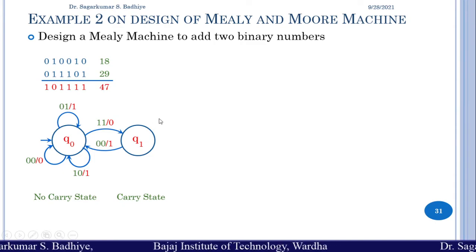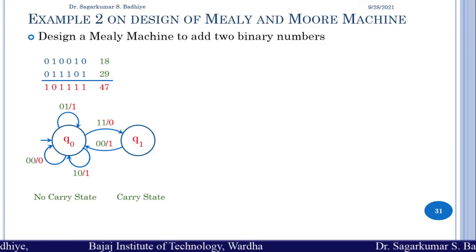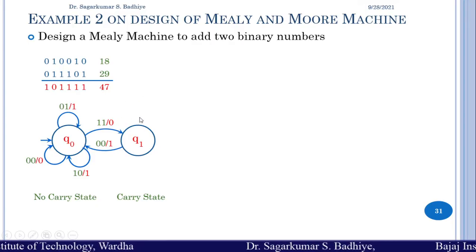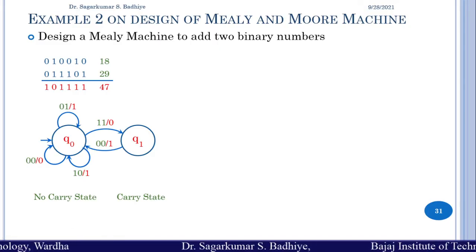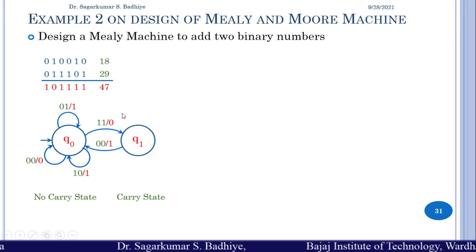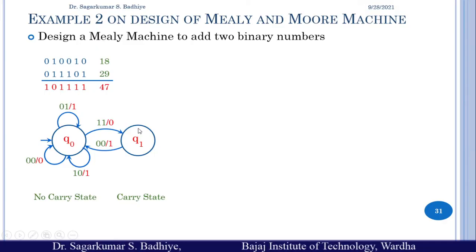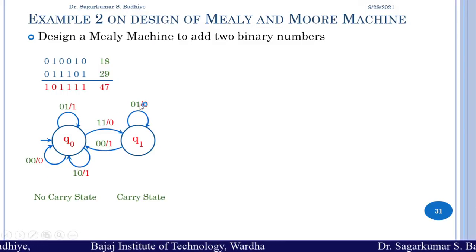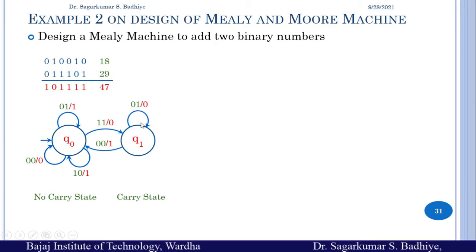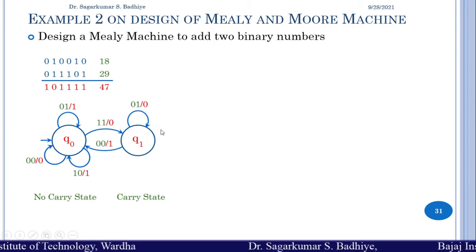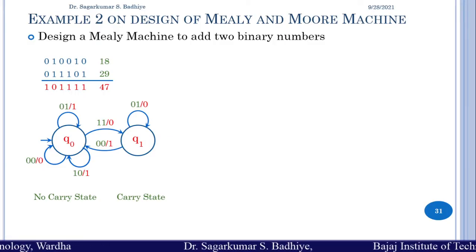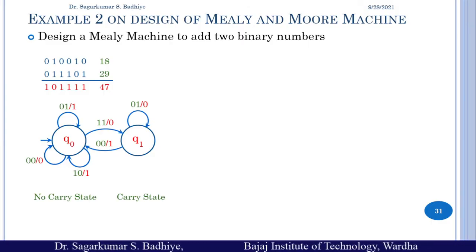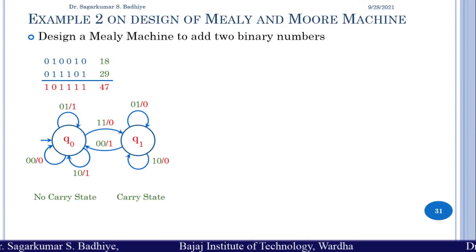In q1, if the input is 01, then 0 plus 1 plus the existing carry gives 1 plus 1, producing output 0 with a carry. So we stay in q1 and produce output 0. Similarly, if the input is 10, then 1 plus 0 plus the carry gives 1 plus 1, producing output 0 with a carry. We again stay in q1 and produce output 0.